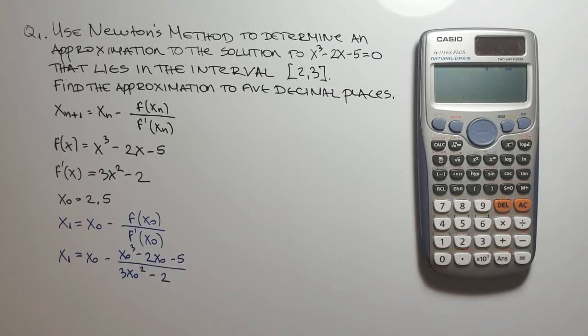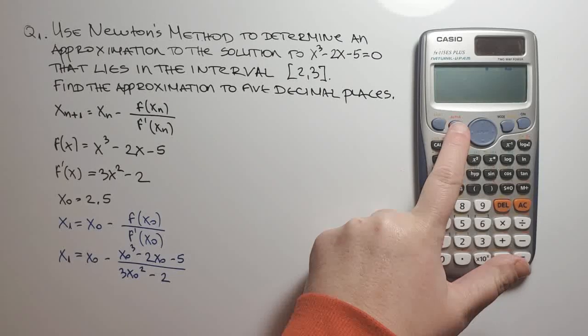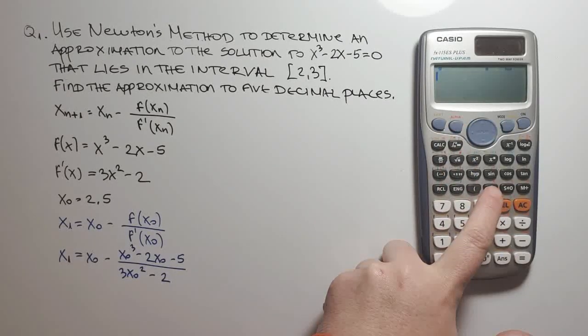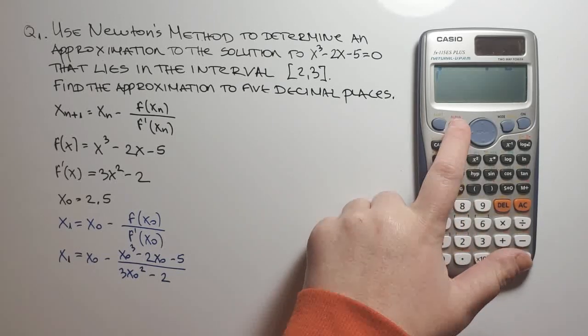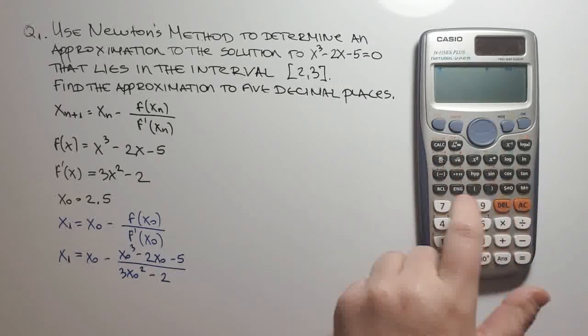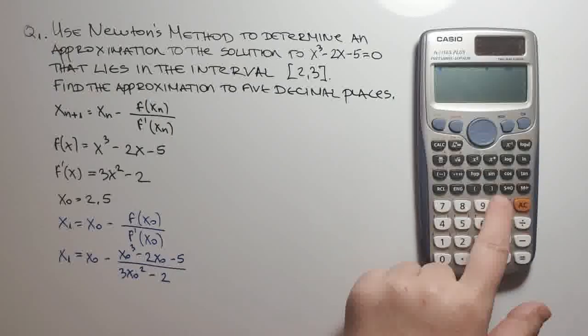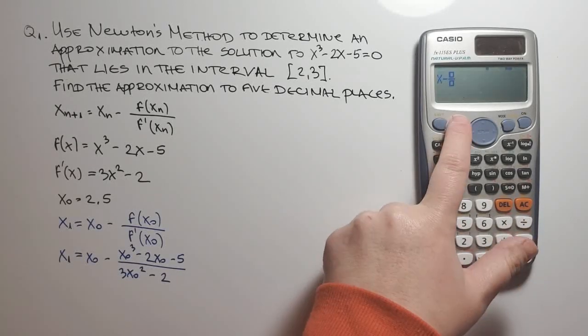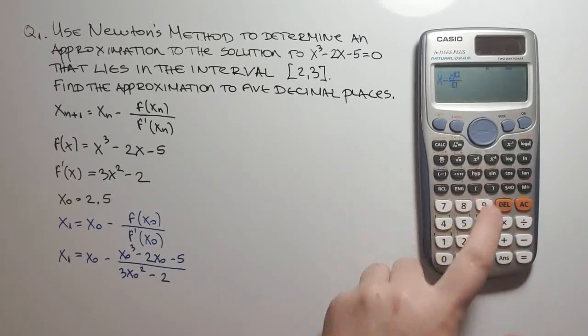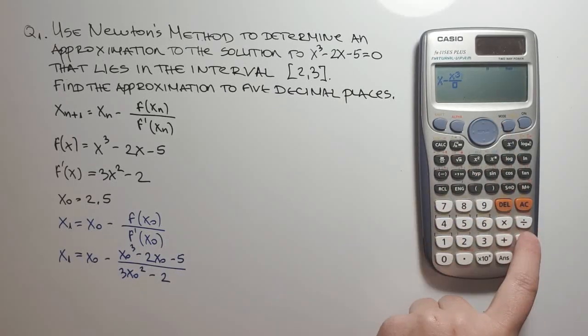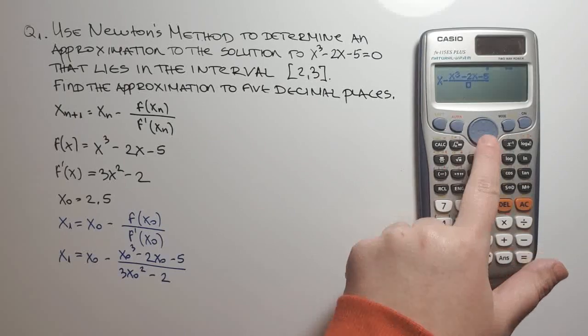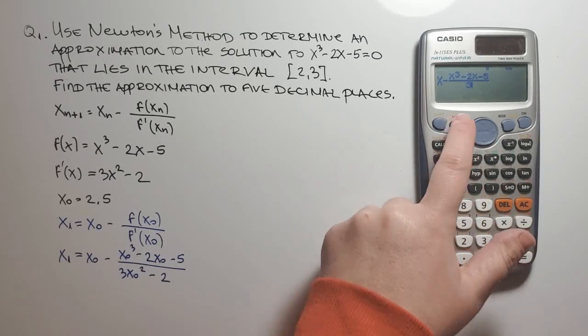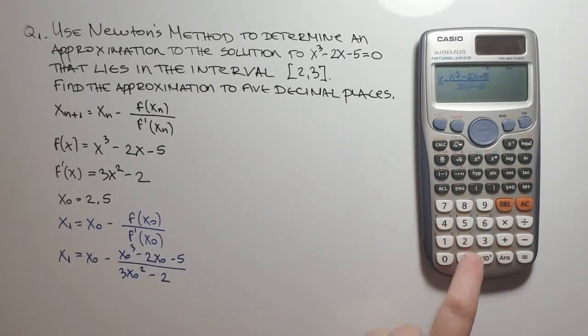What I'll do first now is I'll insert the formula in my calculator. I will use this alpha key here to access the x variable, so you use this red key to access each of the red options above each key. So we have x minus alpha x cubed minus 2x minus 5 divided by 3x squared minus 2.